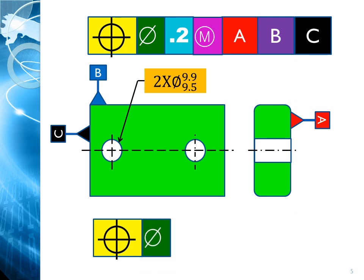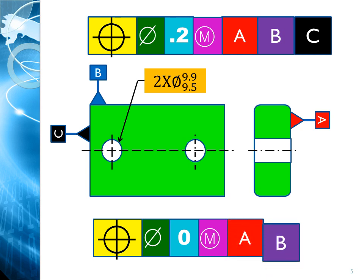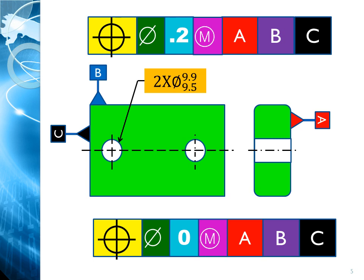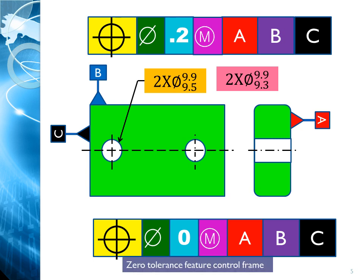Zero tolerance means the tolerance value is zero at MMC with respect to datum A, B and C. If we convert the position tolerance value to zero, let's look at what happens to the size of the hole. The lower limit of the hole size becomes 9.3. The 0.2 tolerance value from the feature control frame is deducted from 9.5 — that is 9.5 minus 0.2 gives you 9.3. So the hole's available bandwidth of acceptance is 0.6, that is 9.9 minus 9.3.